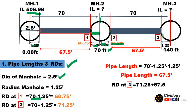For the second segment, the end RD at point number 3 will be 71.25 plus 67.5, which equals 138.75 feet. So at the start of the third manhole, the reduced distance is 138.75 feet. That's how you can calculate the pipe length when the diameter of the manhole is known.